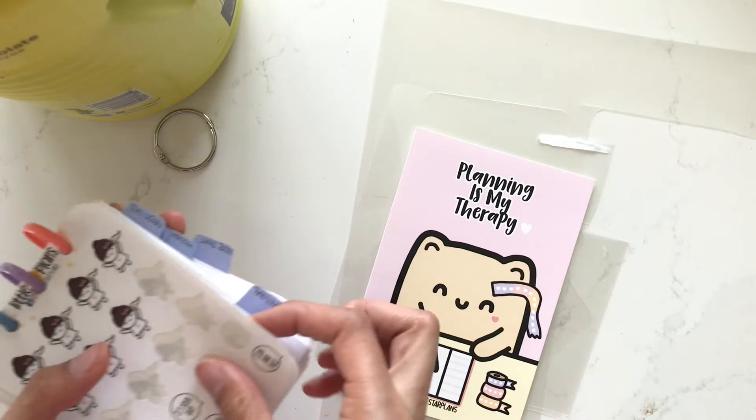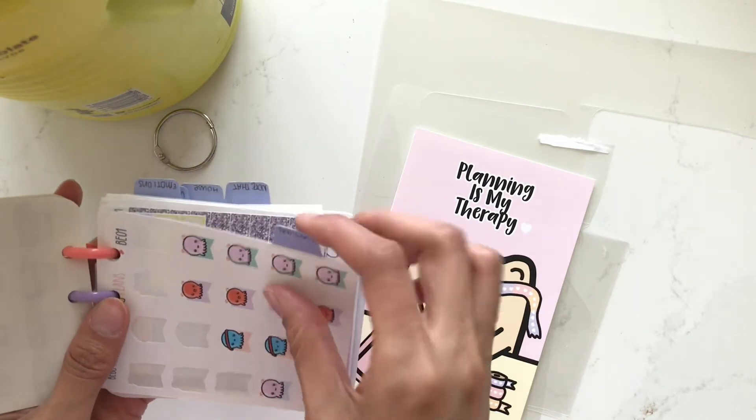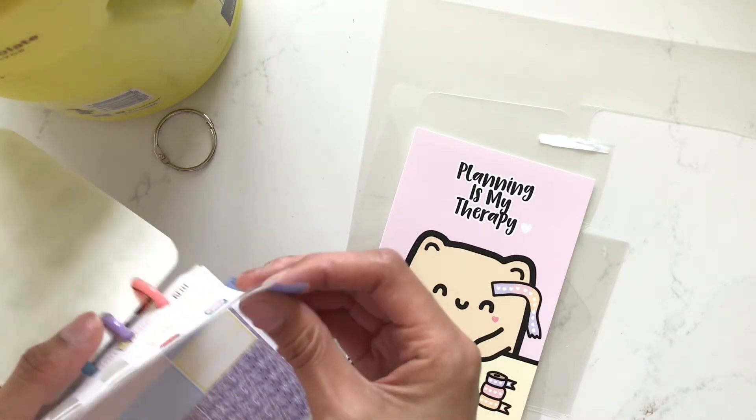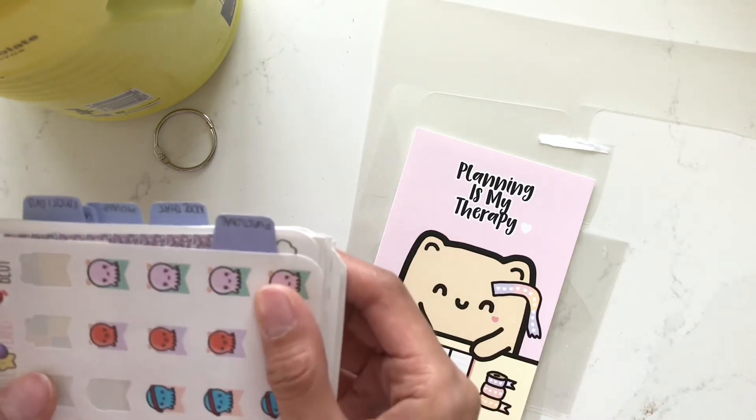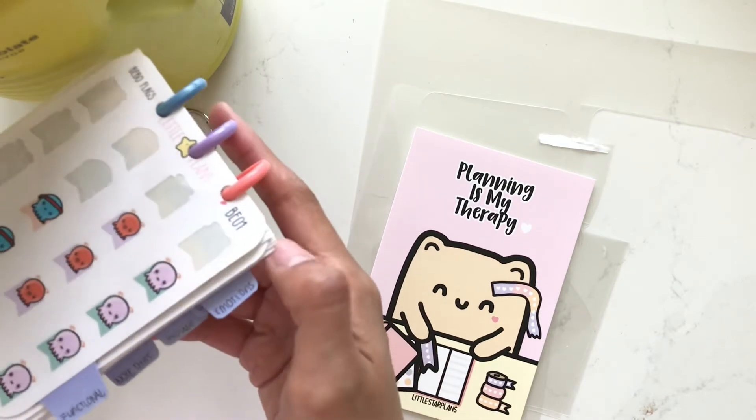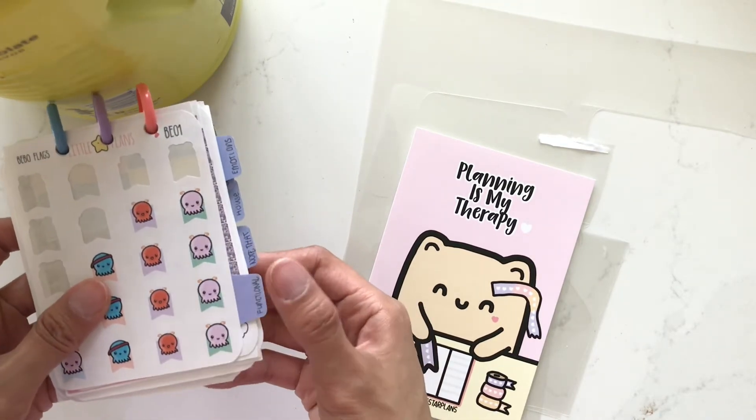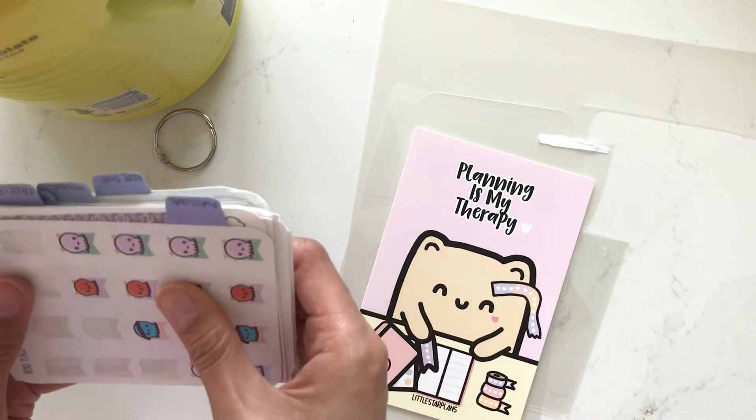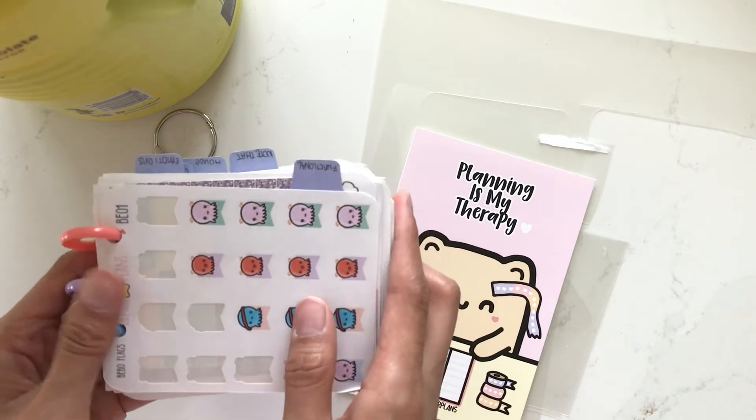So I have these currently Avery tabs which you can get anywhere like on Amazon or the website, and you just stick on. So I have functional, emotion, house, notedat, and work. But later on as I have more collection I'm gonna add more tabs, but this is what I have so far - my most frequently used stickers.